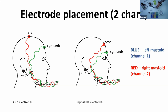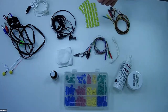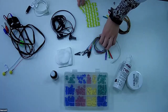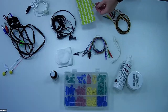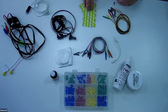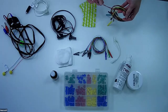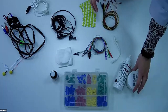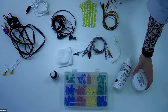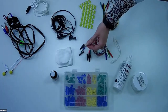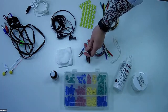Today we will use self-adhesive single-use electrodes (Hydrocal). You can also use cup electrodes — before applying, fill them with special adhesive paste. If you use single-use Hydrocal electrodes, you need special cables with alligator connectors. We can also use different types of stimulators during ABR testing. Today we will use insert earphones.